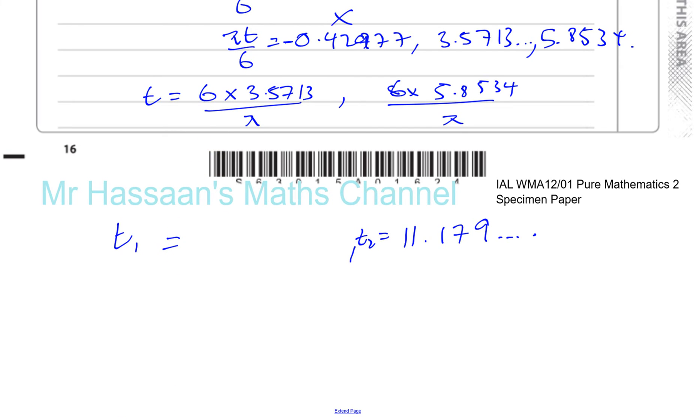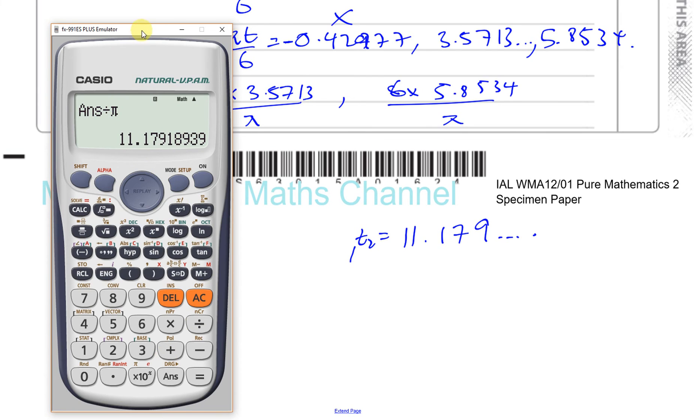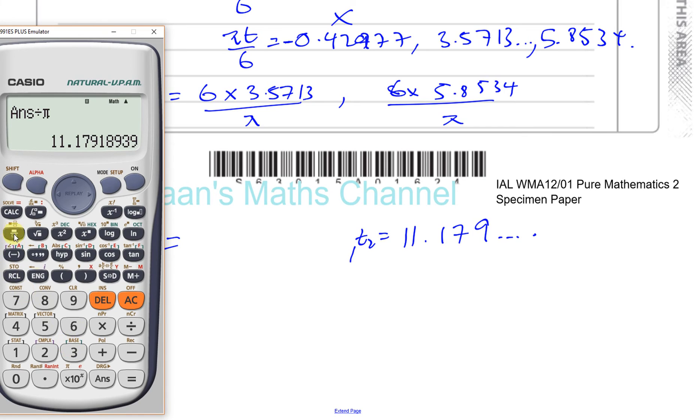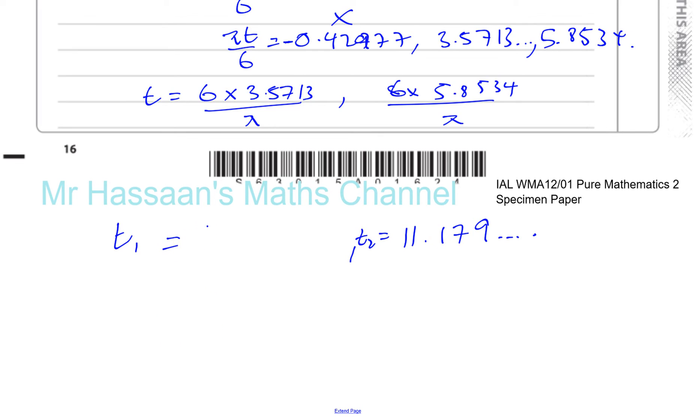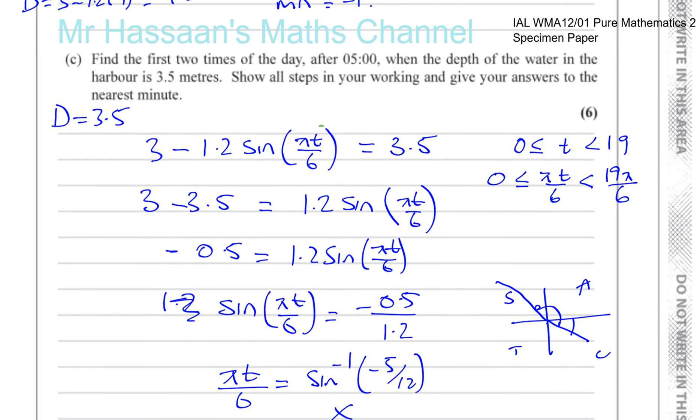And the first time is going to be given by 6 times 3.5713 divided by pi, which gives us 6.8206. So those are not the times. The question asks, find the first two times of the day after 5 a.m.